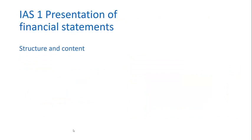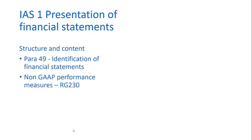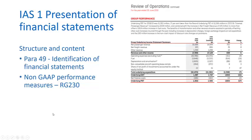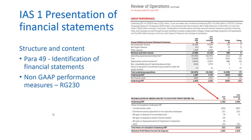In terms of the actual structure or content of general purpose financial reports, the financial report must clearly identify the financial statements. There is the possibility that firms may report non-GAAP performance measures, and in Australia these are dictated by RG 230. Firms can provide an alternative measure of performance — as seen with Qantas — and if they do so, they need to provide a reconciliation of their non-GAAP performance measure to a relevant statutory performance measure. Qantas provided a reconciliation of underlying profit before tax to statutory profit before tax.